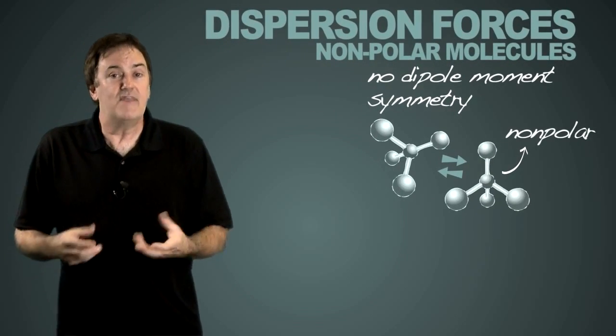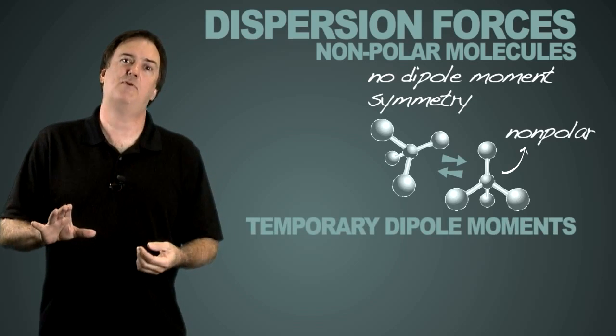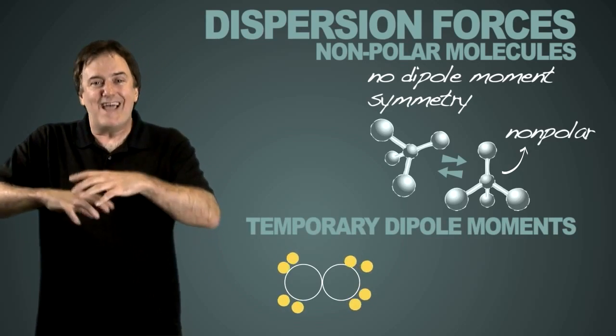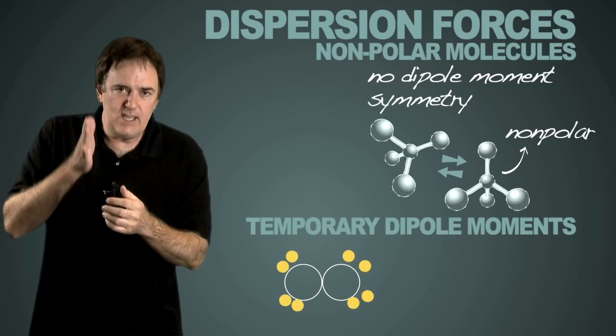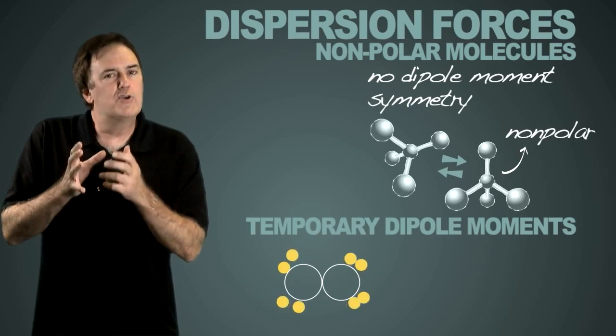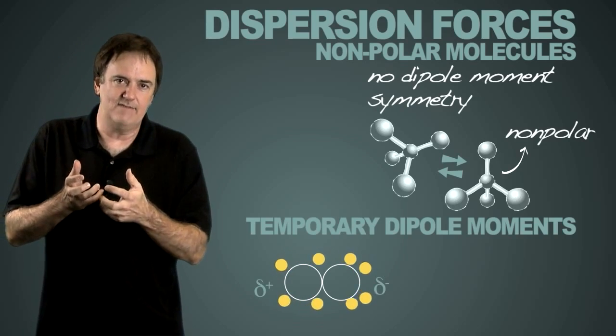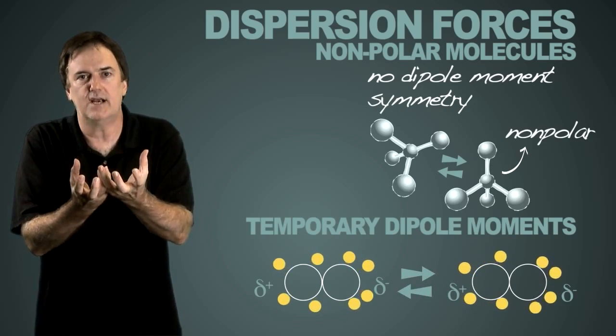They're dispersion forces, and they are based on what we say are temporary dipole moments. Temporary dipole moments is when the electrons within the whole molecule are in such flux that at any one point in time you're going to catch it with a slight positive end and a slight negative. And another molecule is going to get caught in that same time and there's going to be an attraction there.